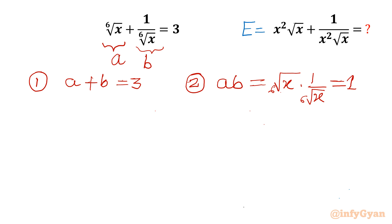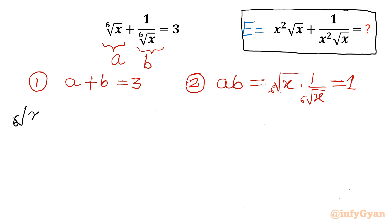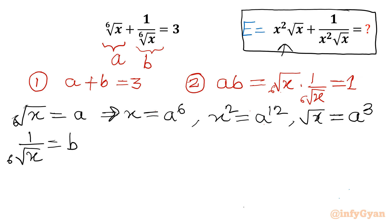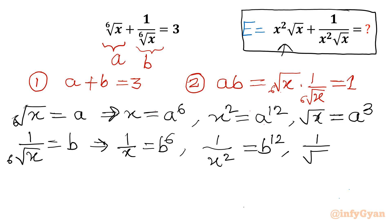Our system is ready; we only have to frame our expression in terms of a and b. From the substitution: 6th root of x = a, so x = a⁶, x² = a¹², and √x = a³. Similarly, 1/(6th root of x) = b, so 1/x = b⁶, 1/x² = b¹², and 1/√x = b³.